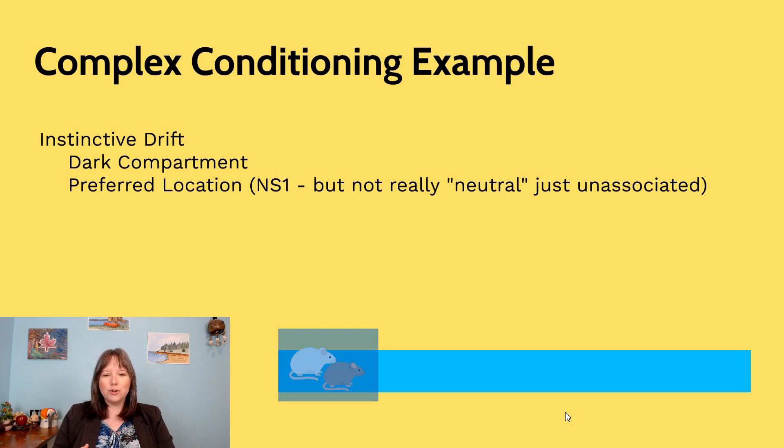The researchers added a dark end to one of the conveyor belts. It had a little roof, it had a little covering and they could add a bit of a box there. So the component was a preferred location and the rats tended to drift there, but it wasn't linked to any consequence, it wasn't paired to anything.